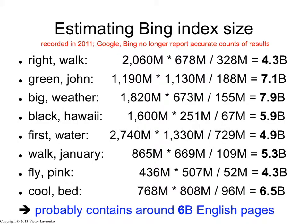Green John, Big Weather, Black Hawaii, First Water, and so on and so forth. For Green John, I get different numbers, and the overall estimate comes out at 7.1 billion. For Big Weather, 7.9 billion. Black Hawaii, 5.9, and so on and so forth. So I get a bunch of estimates: 4.3, 7.1, 7.9, 5.9, 4.9, 5.3, 4.3, 6.5.